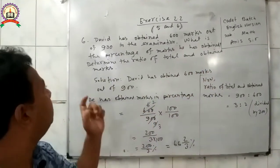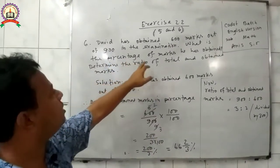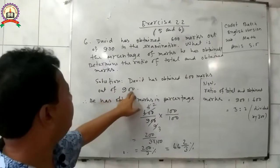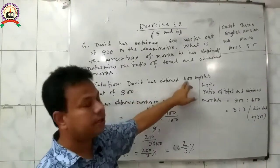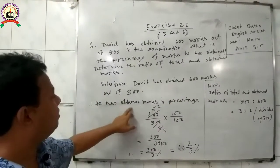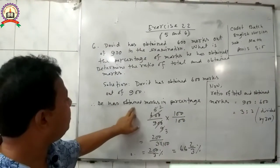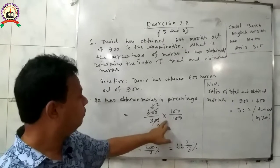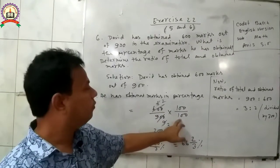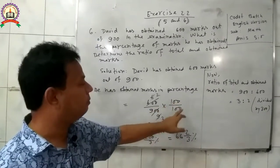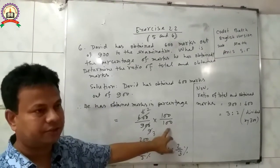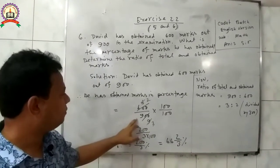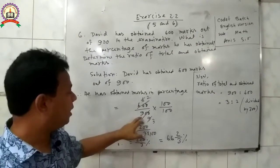Solution — First part: David has obtained 600 marks out of 900. To find the percentage of marks obtained, we write 600 divided by 900, then multiply by 100 over 100. To solve for percentage, you multiply by 100 and keep that 100 as the percent sign. Calculating: 900 divided by 100 equals 9.